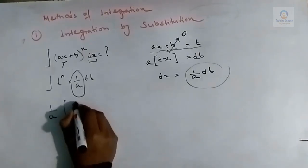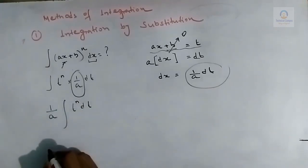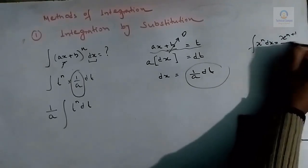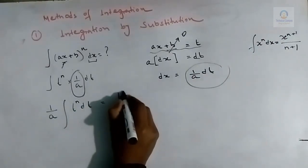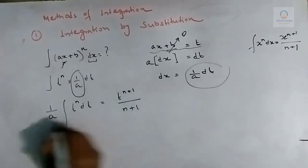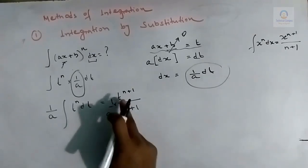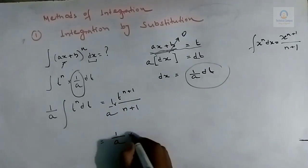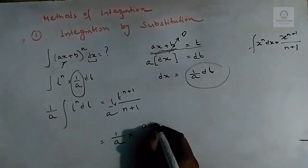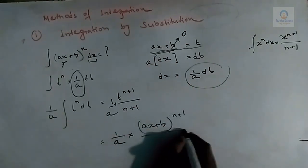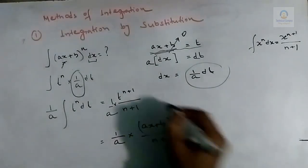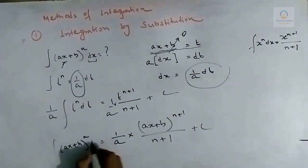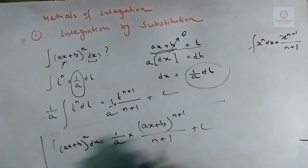So the integral becomes (1/a) times the integral of t^n dt. Using the formula: integral of x^n dx = x^(n+1)/(n+1), this gives us (1/a) · t^(n+1)/(n+1). Now replacing t back with ax + b, we get (1/a) · (ax + b)^(n+1)/(n+1).